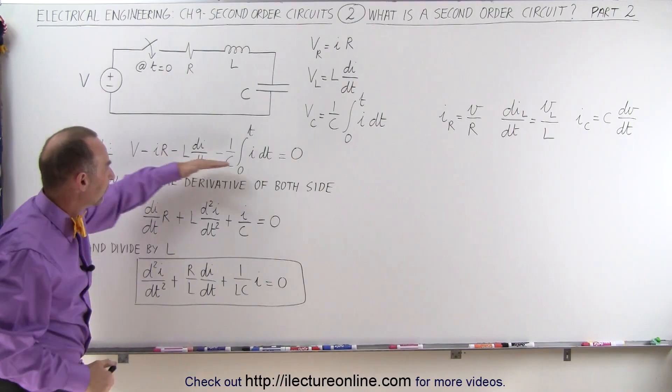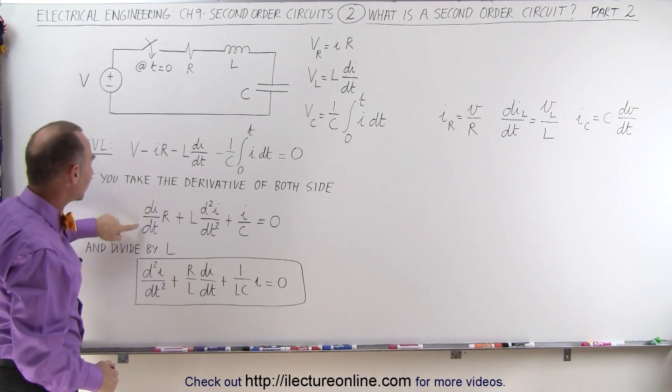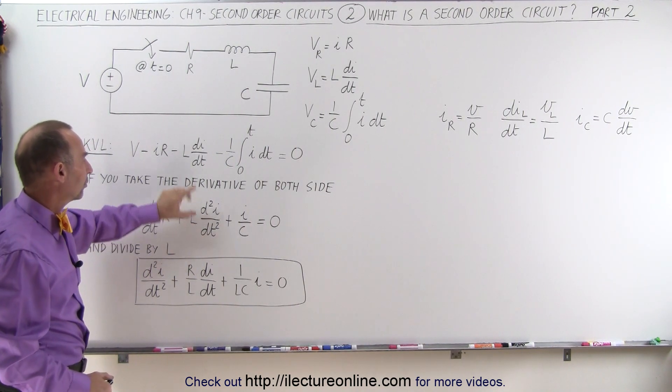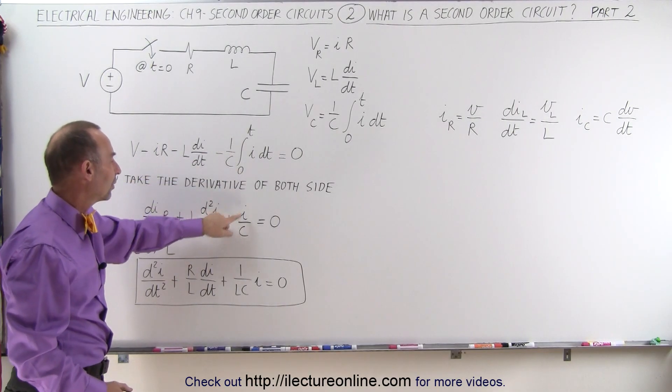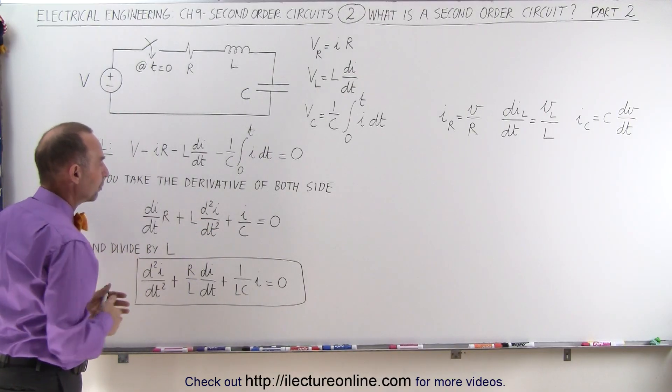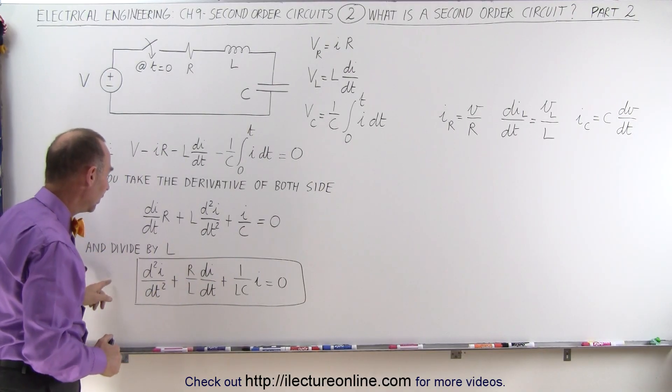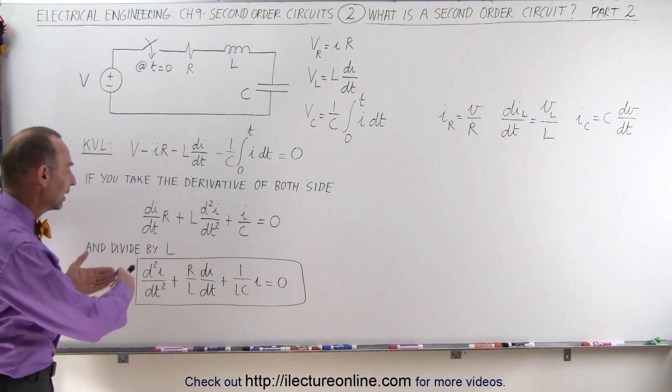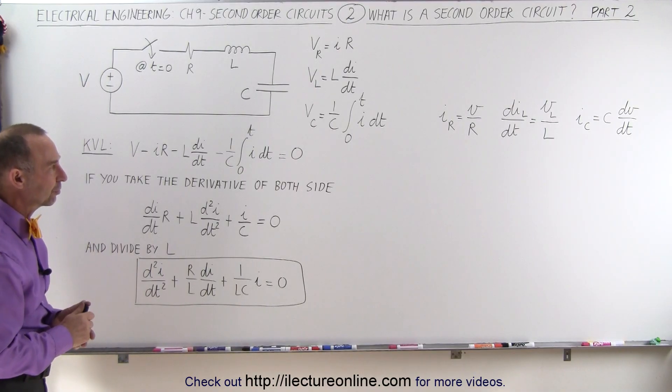If you now take the derivative of every one of those terms, since this is a constant term that will go to zero, we end up with a di dt times r, an L d squared i dt squared—the second derivative of current with respect to time times L—and here we get rid of the integral sign and simply have i over c. Notice when you rearrange it, we multiply both sides by negative one as well, rearrange the term and divide both sides by L. We end up with this standard second order differential equation that explains what's happening in the circuit as a function of time.